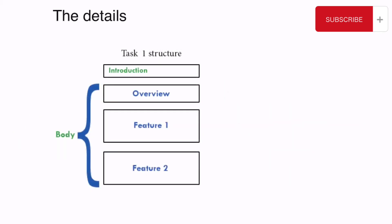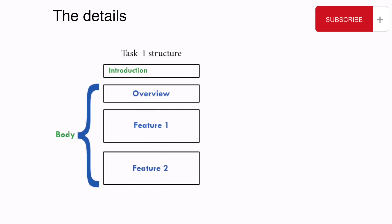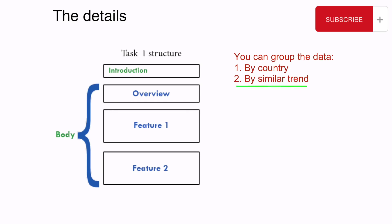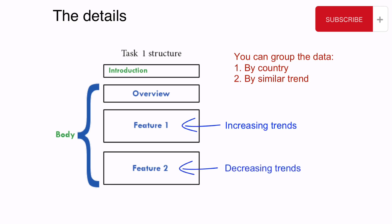After you have finished the general overview, you need to give the specific details. It's a good idea to divide the part of writing where you give the details into paragraphs, and to do that you need to group your data by some feature. In our case, we could group data in two ways. The first way is to group by country, describing each country's rates in a separate paragraph. The second way is to group by similar trend, the same way as we did in our overview. The second option is more logical as it follows our overview, so I will describe the increasing trends in one paragraph and the decreasing trends in another paragraph.